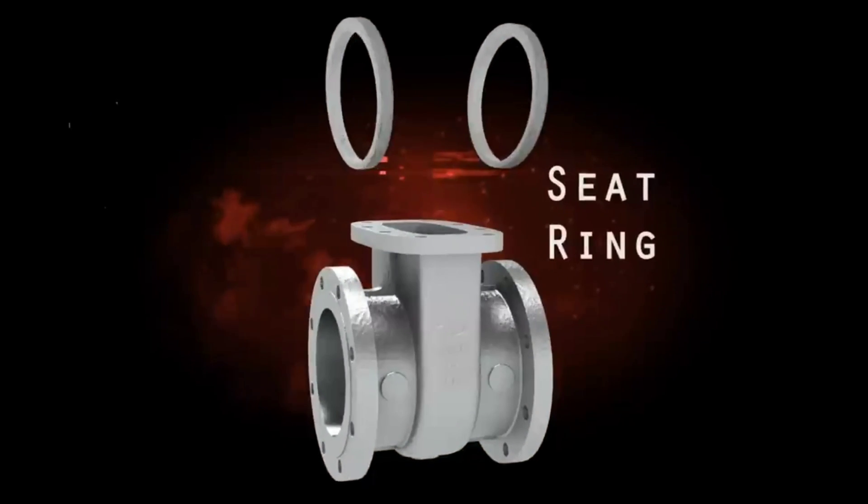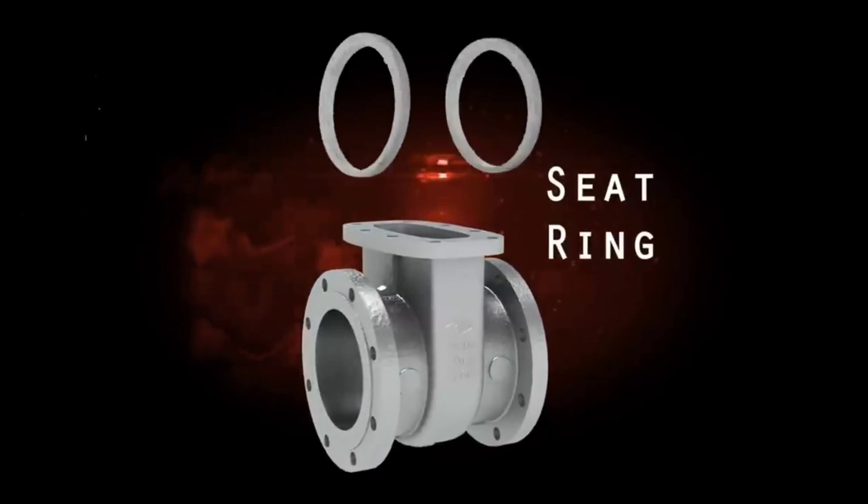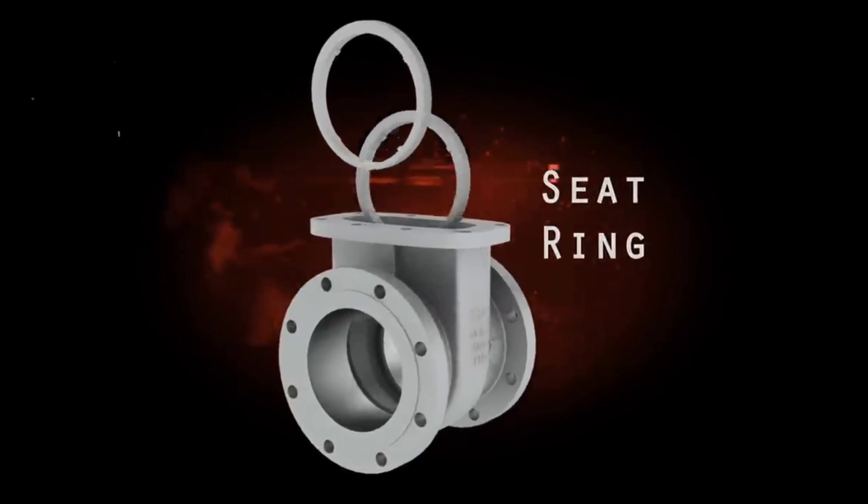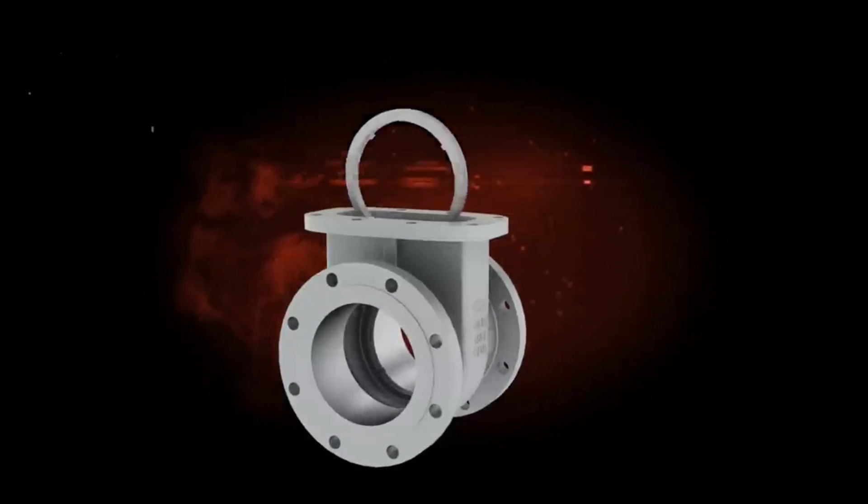Seat ring. A gate valve has two seat rings that interface with the gate to ensure the sealing of the valve. These seats come either as part of the body or in a seat ring construction.